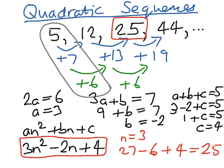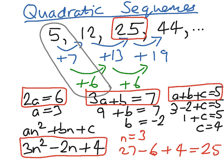So when you have a sequence of numbers, find the first difference. If they're different, find the second difference. Then remember that 2a equals the second difference, 3a plus b equals the first difference, and a plus b plus c equals the first term. You can apply that to the general form of the nth term of the quadratic sequence to find your answer.